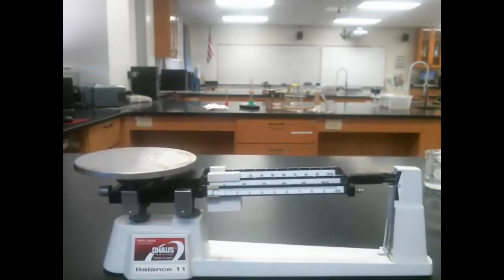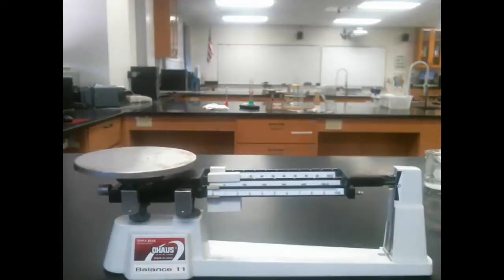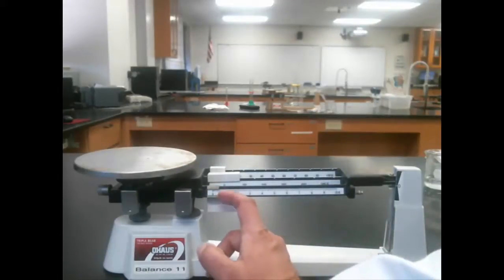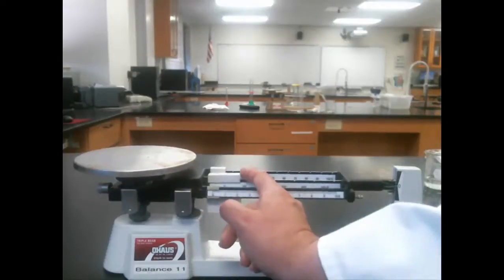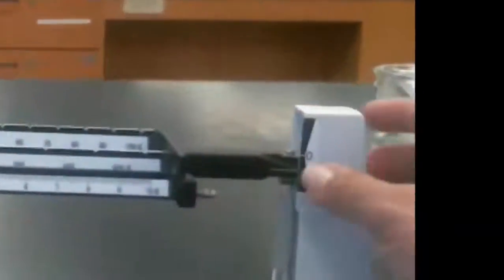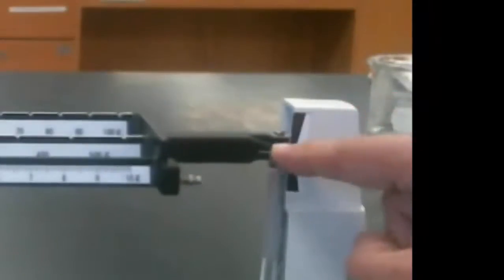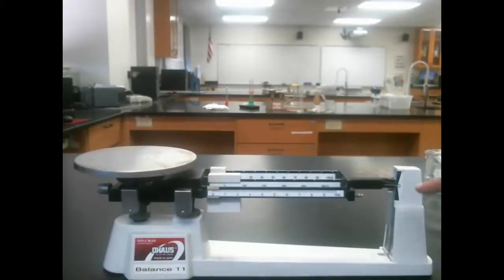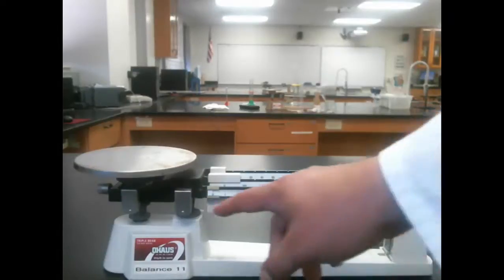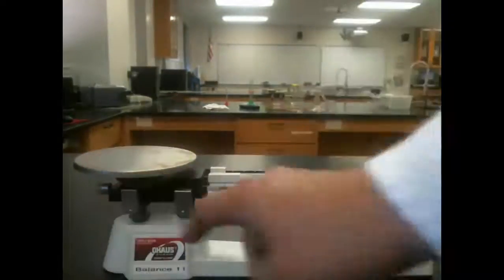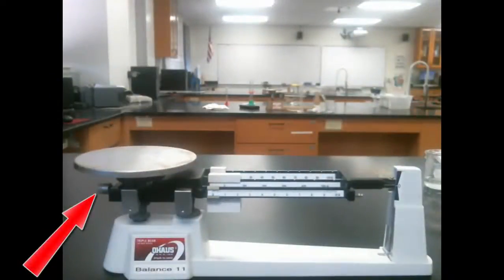Before you use the triple beam balance, the very first thing you want to do is make sure that the balance is actually calibrated correctly and zeroed out. That means that when all of the weights are back here at the zero position, this line on the balance arm should match up with the line on the zero on the balance base itself. If it's not, and this looks like it might be just a little off, you can adjust this slightly by using a little knob underneath the balance pin that turns clockwise and counterclockwise and allows you to change this zeroing.